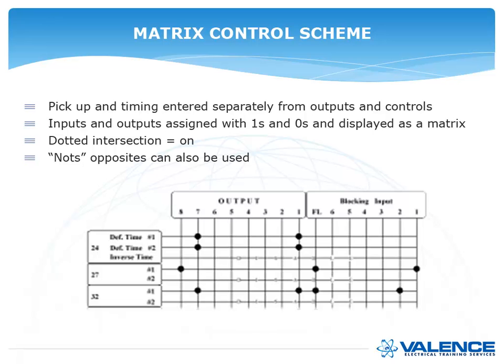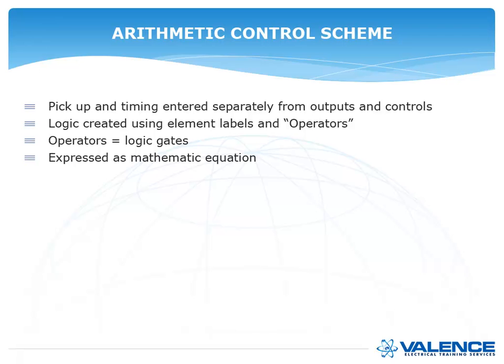Whereas if you have an undervoltage, which is the 27 element, it'll operate output 8, but it will be blocked if you have a fuse loss or input 1 operates.